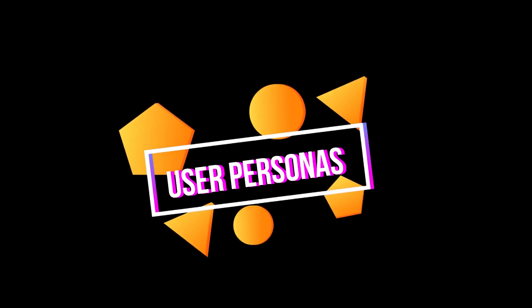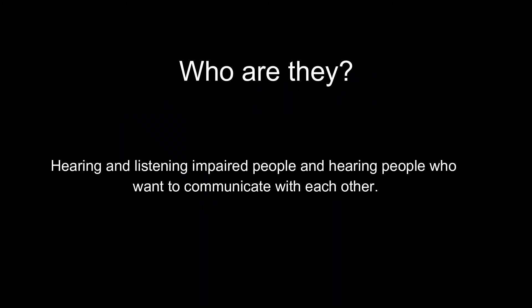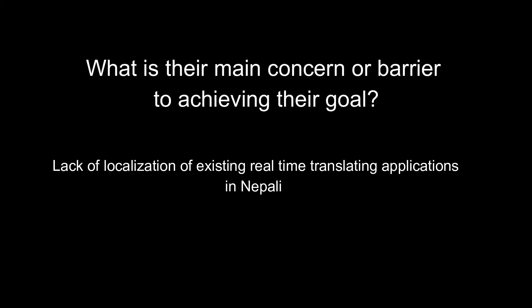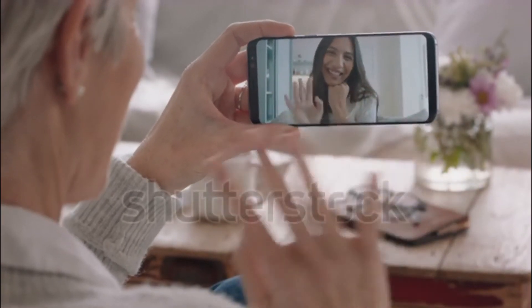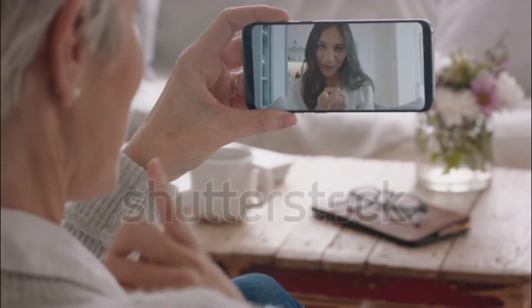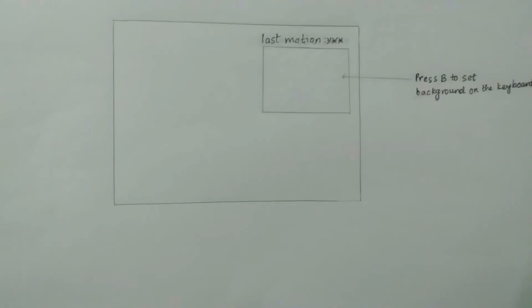Our users are both hearing and hearing-impaired people who want to communicate with each other in real time. Both users are potentially Nepali — one who can make Nepali Sign Language and the other is a hearing Nepali person who can understand Nepali letters and numbers. Their goal is to communicate with each other, but the major issue is the language barrier. Our application gives them a common ground through which they can fluently converse regardless of whether the language is visual or verbal.